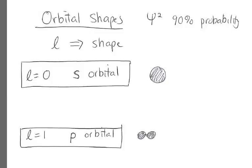We're going to talk about shapes of orbitals, and you may recall we've talked about three quantum numbers: n, l, and m sub l. The shape comes from l, which is the angular momentum quantum number. The shapes we're talking about refer to psi squared, because psi squared gives the probability of finding an electron in a certain location, and these shapes are where 90% of the psi squared function occurs. So l is shape.